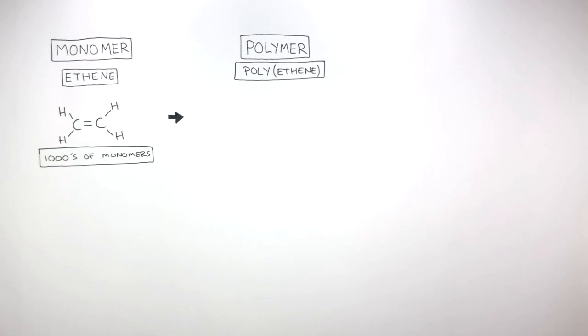These thousands of monomers are added together in a reaction called addition polymerization to form the long chain polyethene, which is represented by this displayed formula.